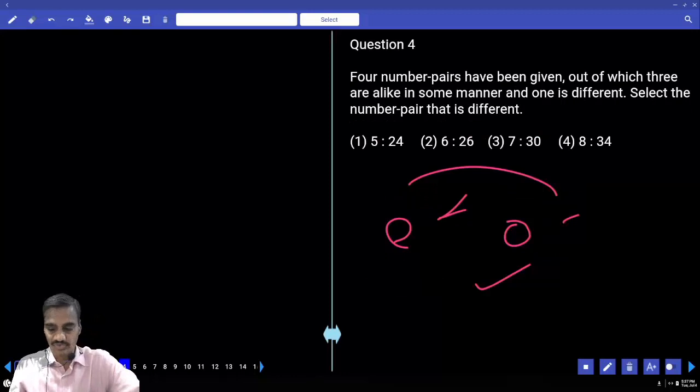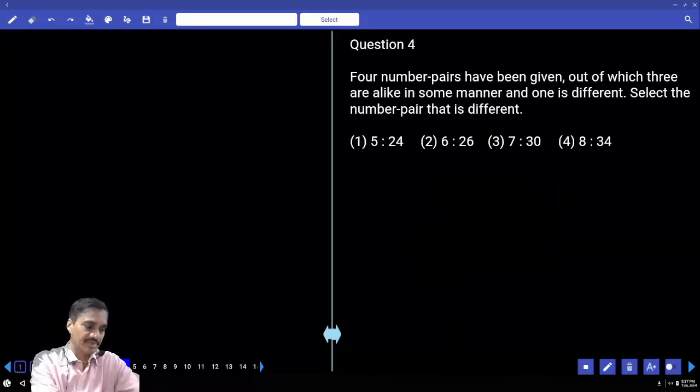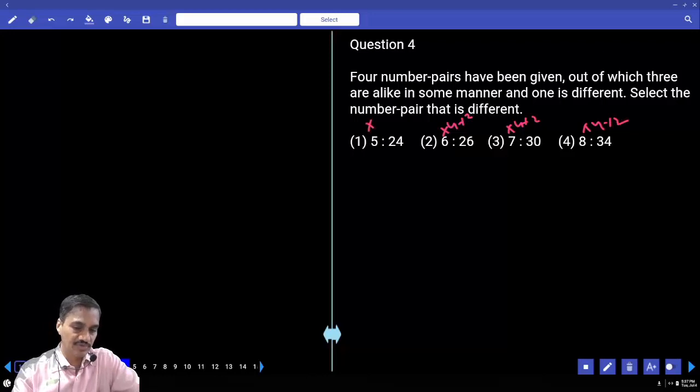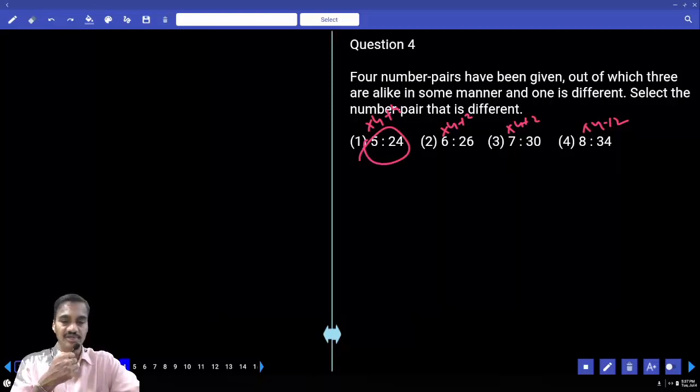Question number four: 5, 24 - find the odd pair. 6 and 26: 6×4+2. 7×4+2, 8×4+2. But 5×4 plus four. Hence the wrong one, odd one, is choice one. Except one, the remaining are ×4+2, first one is ×4+4.